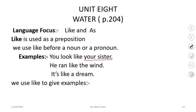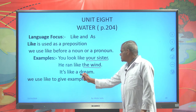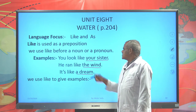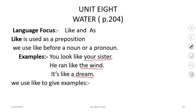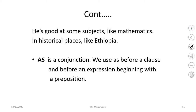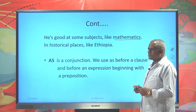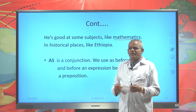For example: 'He ran like the wind,' 'It's like a dream.' Look — all of these are nouns, and 'your sister' is a pronoun. Like is preceded by a noun or pronoun. You can also use like in different contexts, such as: 'He is good at some subjects like mathematics,' or 'historical places like Ethiopia.' In this context, like is used to give examples.